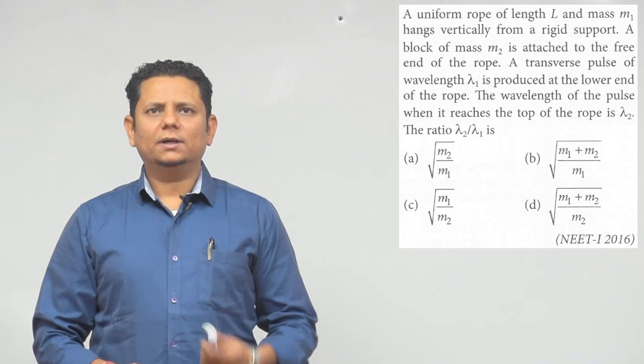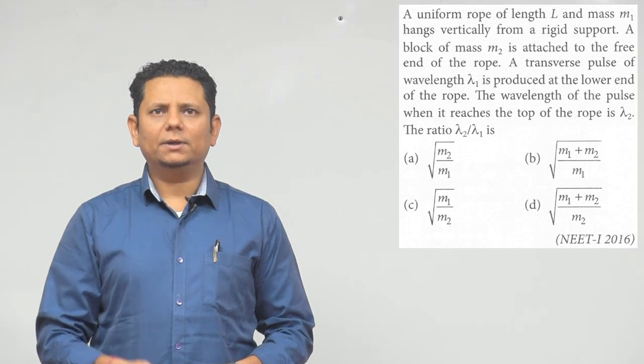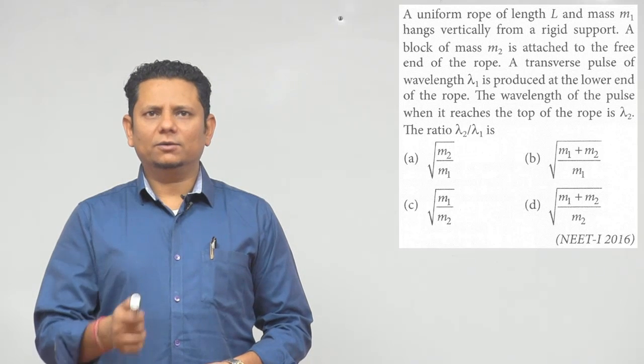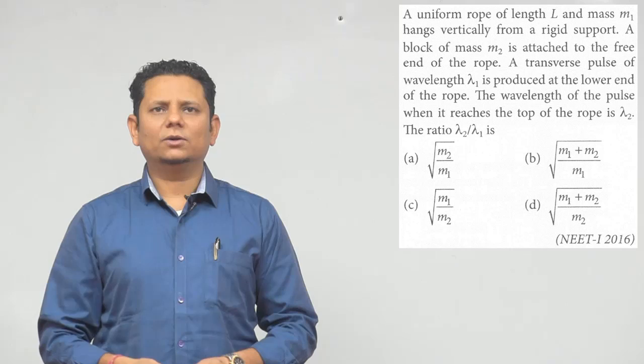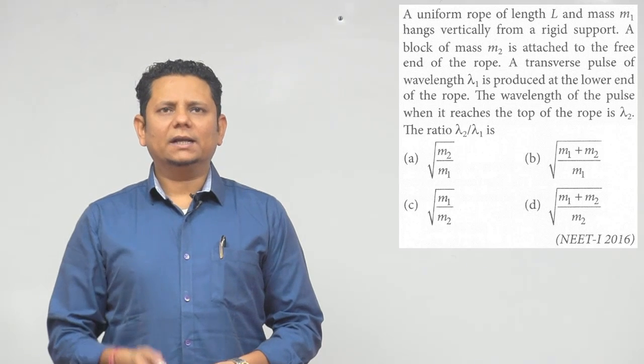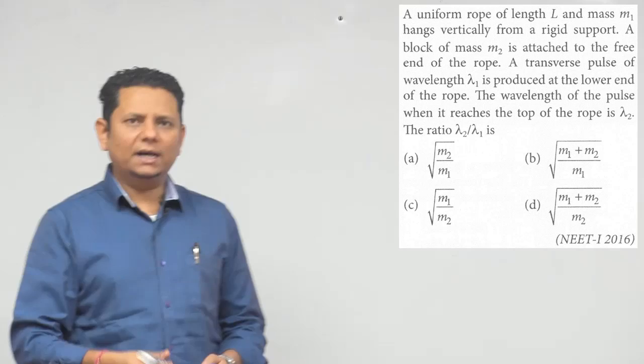A transverse pulse of wavelength lambda 1 is produced at the lower end of the rope. The question is, what is the wavelength of the pulse when it reaches the top of the rope, lambda 2? Let's find what the ratio of lambda 2 to lambda 1 will be. This is a simple question.